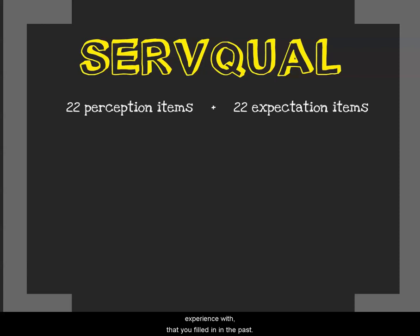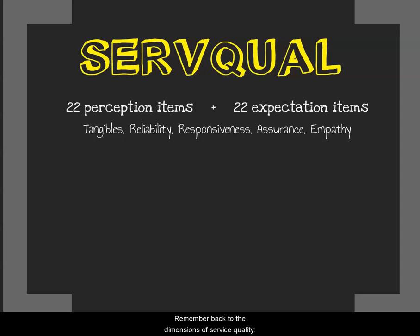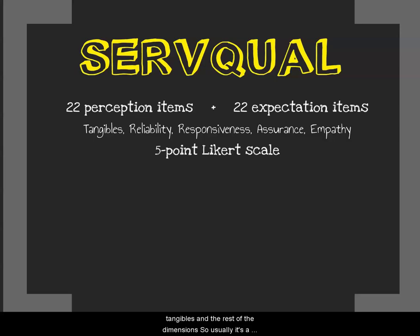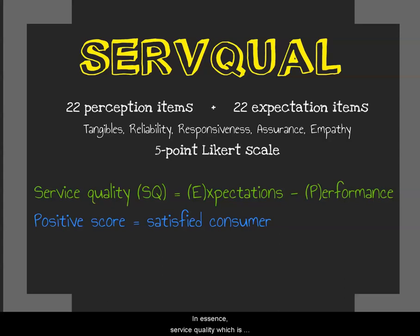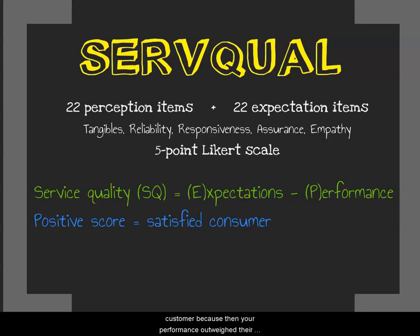The five dimensions of service quality — tangibles, reliability, responsiveness, assurance, and empathy — are tested on a Likert-type scale questionnaire where you read a series of statements and agree or disagree based on your perception. Usually it's a 5-point Likert scale ranging from strongly disagree to strongly agree. This is how you can measure your service quality as an organization, and it has been used in the airline industry and several other service organizations. In essence, service quality (SQ) equals expectations versus performance. If you have a positive score, you have a satisfied customer because performance outweighed expectations; if negative, expectations were higher than actual service performance.